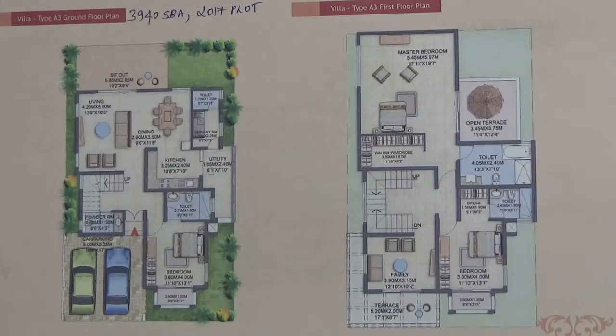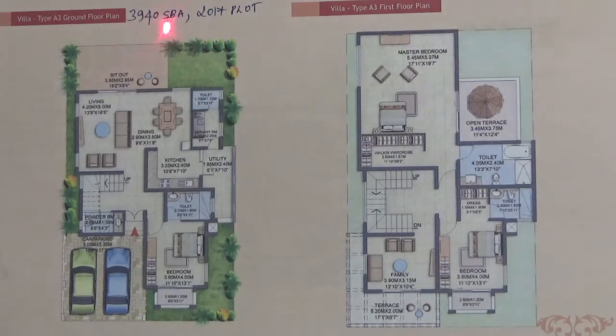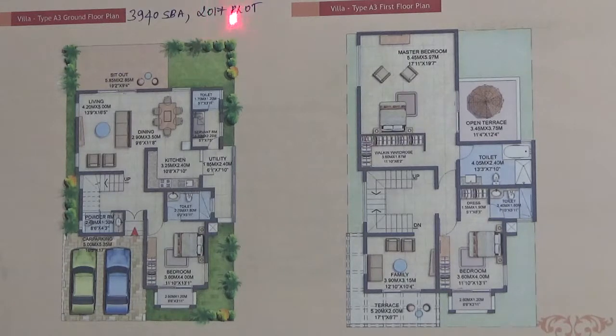This is the floor plan of the A3 type villa. This villa has a built-up area of 3,940 square feet and a plot of 2,070 square feet.